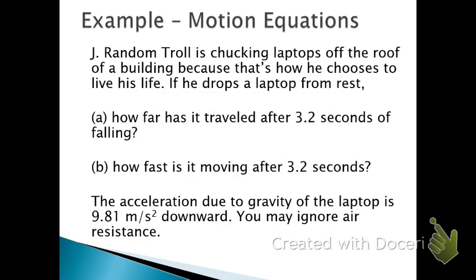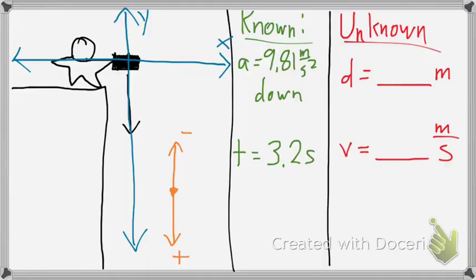Okay, J. Random Troll is chucking laptops off the roof, if he drops a laptop - Oh, hold on, there it is. If he drops a laptop from rest. So this problem didn't explicitly state that the initial velocity is zero, but it's assumed that I know rest means zero meters per second to begin with.